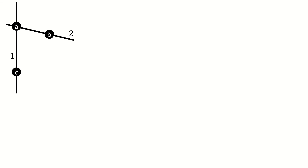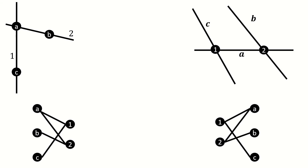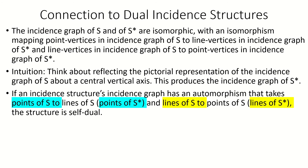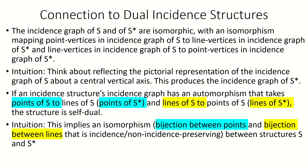As an example, here is an incidence structure along with its dual, and here are their incidence graphs. They are isomorphic. If the incidence graph of an incidence structure has an automorphism that maps each point vertex to a line vertex and each line vertex to a point vertex, then our incidence structure is self-dual. Our automorphism actually implies an isomorphism between the structure and its dual. This is because the special automorphism maps vertices corresponding to points in S to vertices corresponding to points in S-star, and lines in S to lines in S-star, preserving adjacency and non-adjacency in the incidence graph. Therefore, we can also map points in the incidence structure to points in the dual and lines to lines in a way that preserves incidence and non-incidence, which is by definition an isomorphism between the two structures.